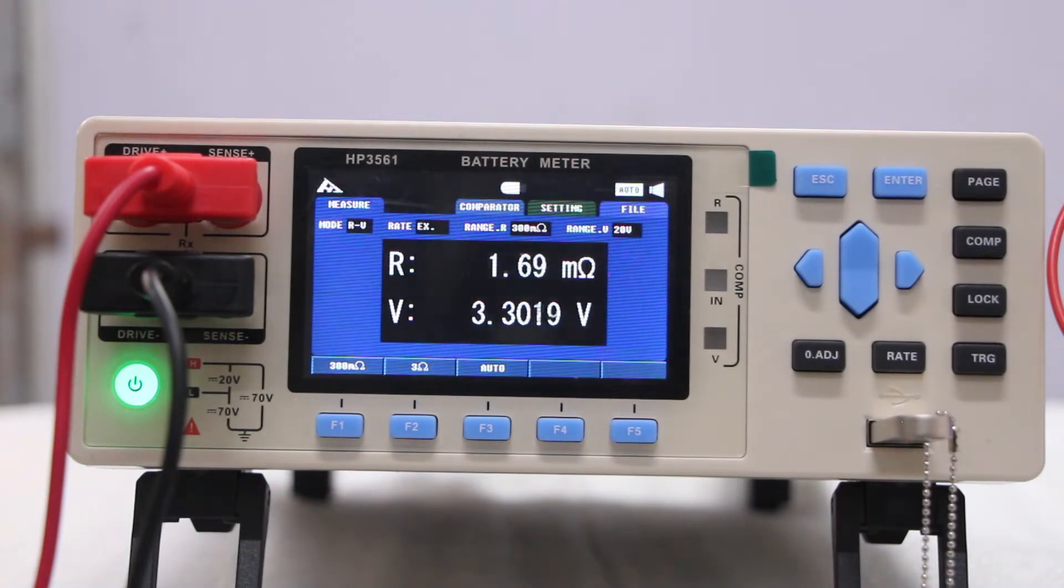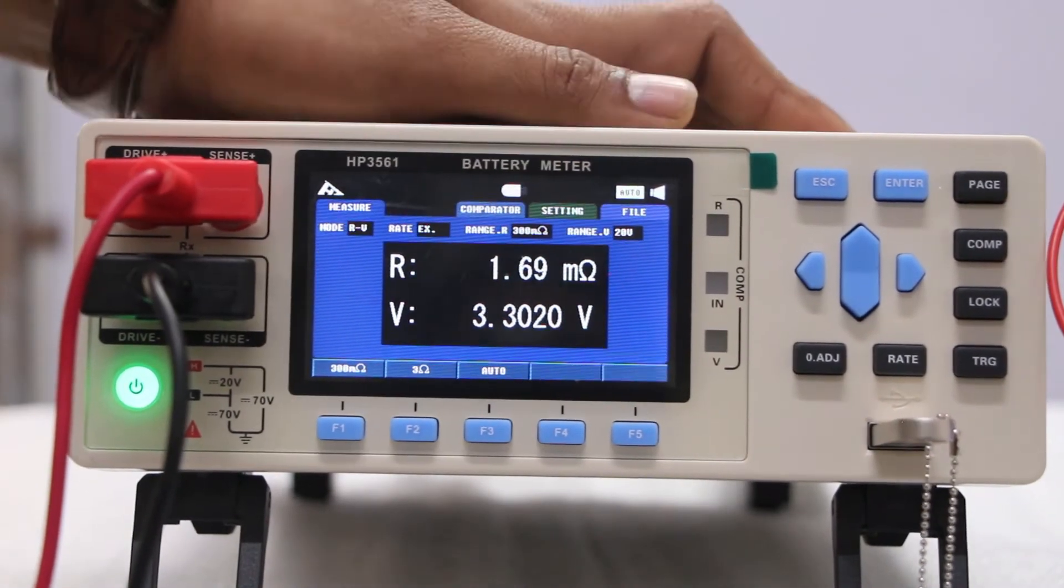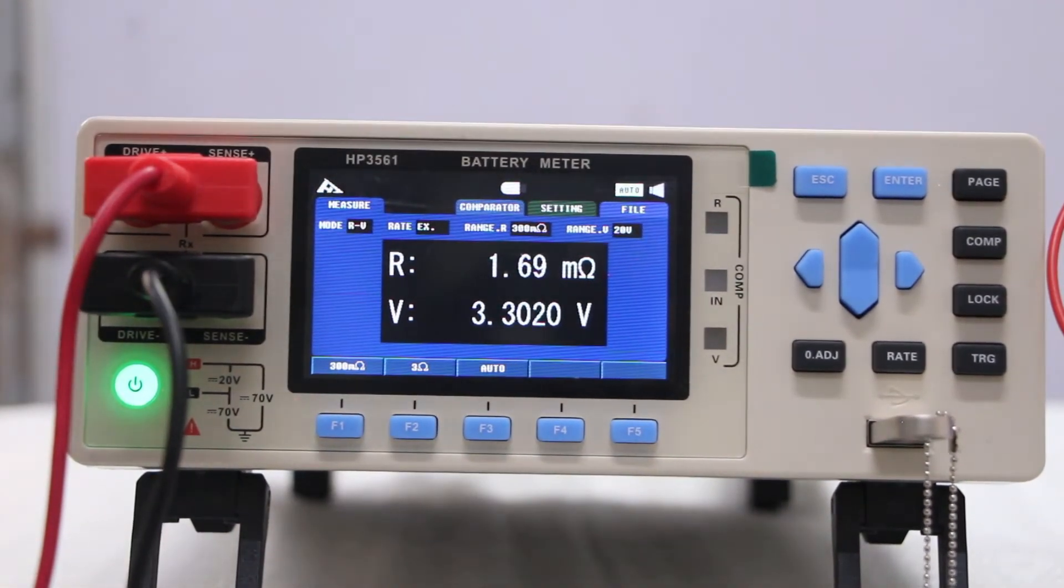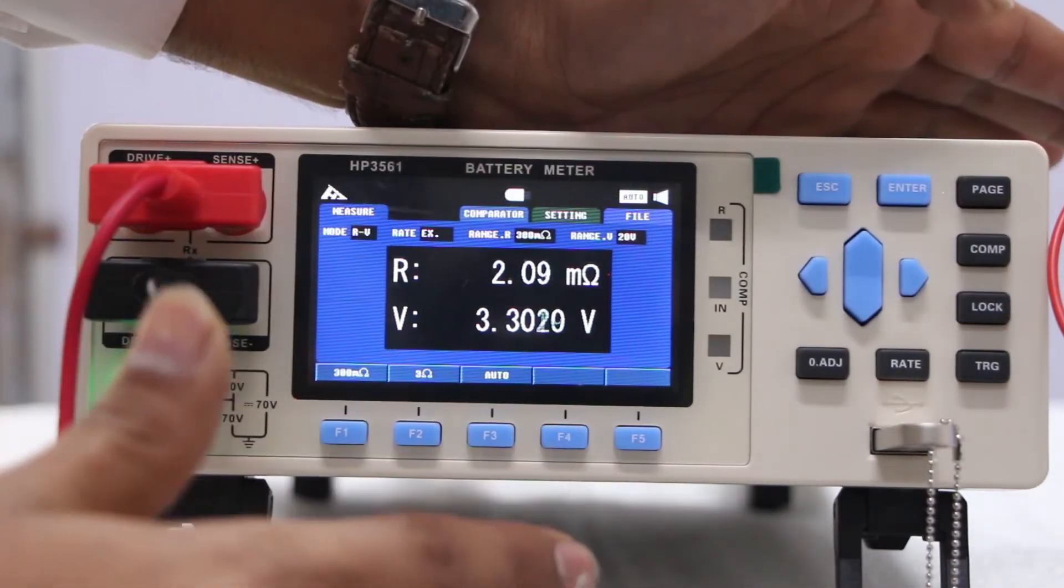In comparator you basically program within a range like we set a range according to your requirements, your battery or cell should be placed within the range. If it will be out of range, your comparator button result will be not good. By using this, you can also compare or sort your cell on the basis of IR or voltage level. Lock is for just locking the screen purpose.